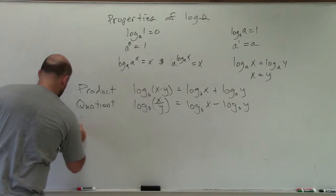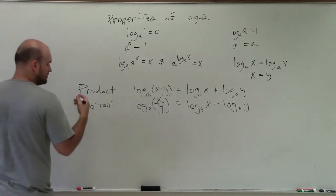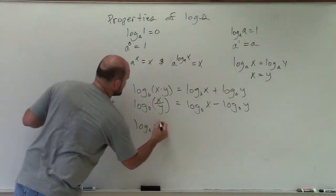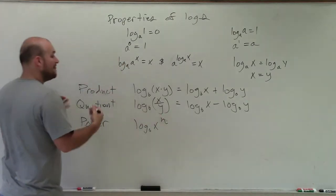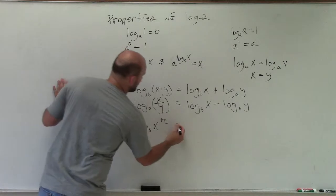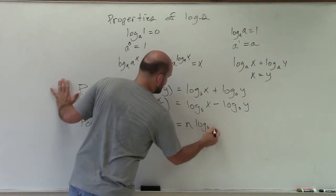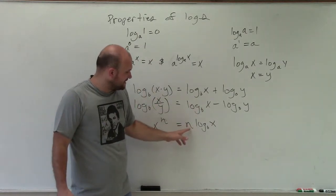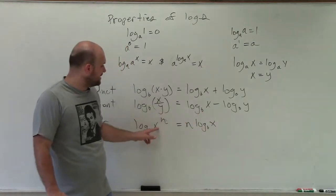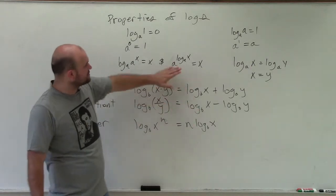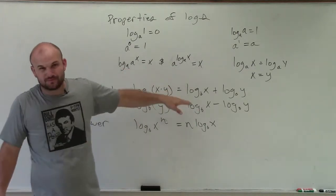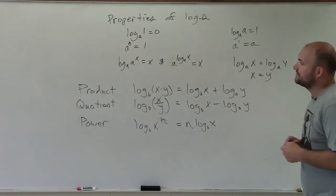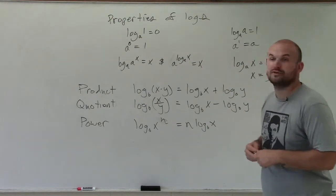The last one is the power rule. If I have log base b of x to the n, I can take the n and rewrite it in front as a coefficient: n times log base b of x. And the same thing works in reverse — if a number is multiplied by a logarithm, I can rewrite it as x raised to that power inside the logarithm. Using these properties will help you better understand the inverse property, especially with numbers like 2 and 4. Those are your basic properties of logarithms. Thanks.